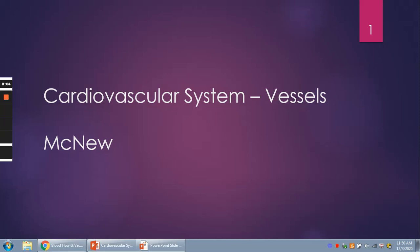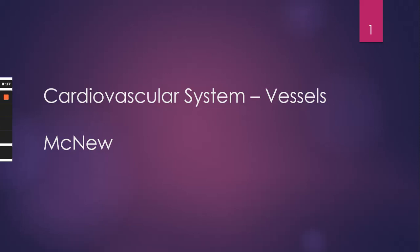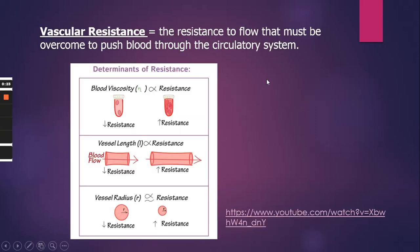Hi, this is McNew and we are going to go over the cardiovascular system, and more specifically the vessels today for our lecture. This is a lecture for my anatomy and physiology one students. We finished up the heart and were talking about factors that affected cardiac output, and now we're going to segue into talking about the vessels as far as vascular resistance goes. What is vascular resistance?